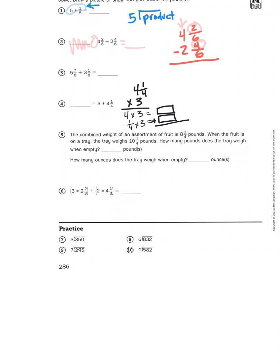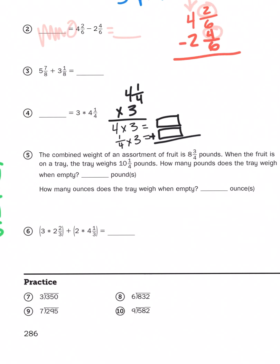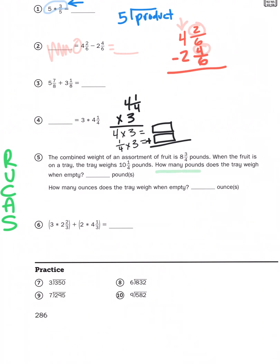Problem number five. The combined weight of an assortment of fruit is eight and three-fourths pounds. When the fruit is on a tray the tray weighs ten and a fourth pounds. How many pounds does the tray weigh when empty? So again you're going to use the RUCKUS strategy to help you solve this problem. You're going to reread this problem, you're going to underline the question, circle the important information, come up with an action plan, and then solve it. I'll give you a hint on the action plan. It says how many pounds does the tray weigh when empty? When the fruit is on the tray, the tray weighs ten and a fourths, but the fruit itself weighs eight and three-fourths pounds. So what are you going to have to do to figure out the weight of the tray?